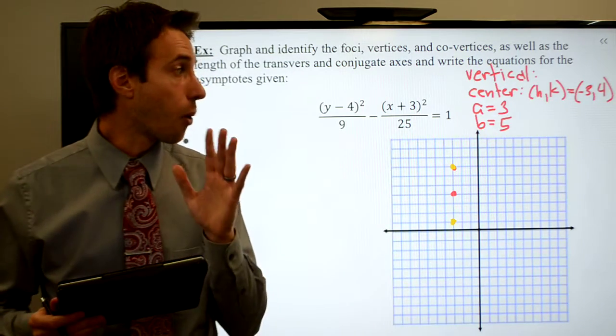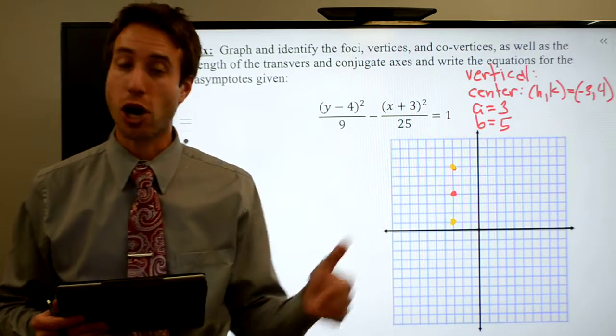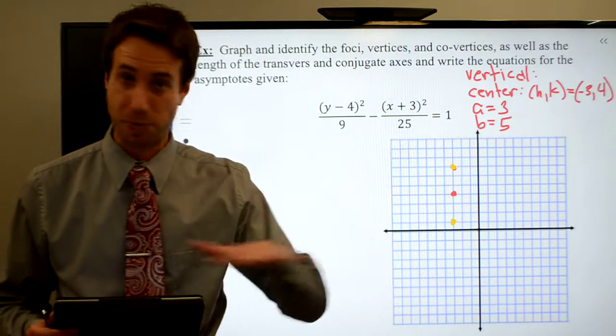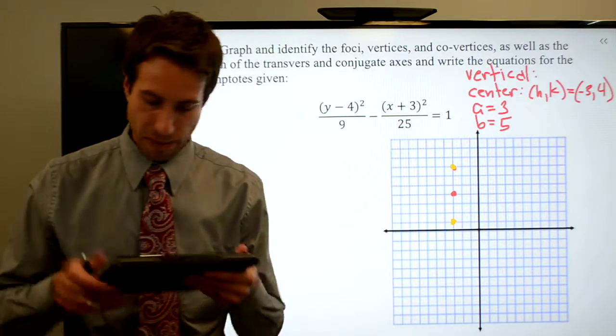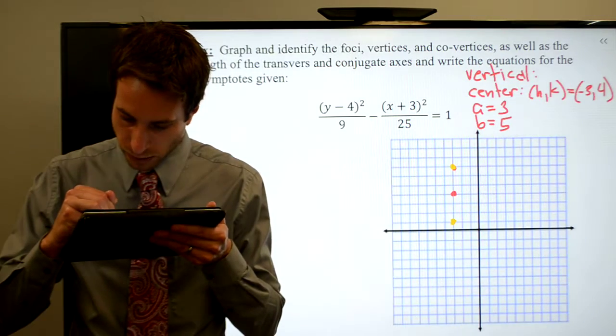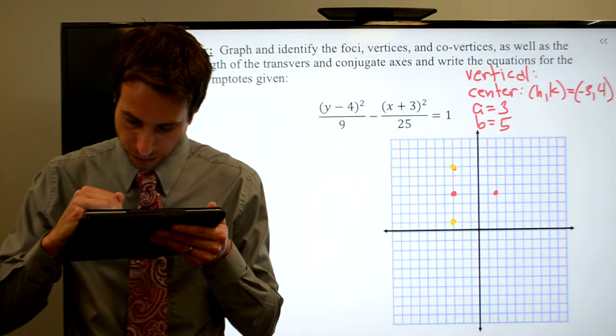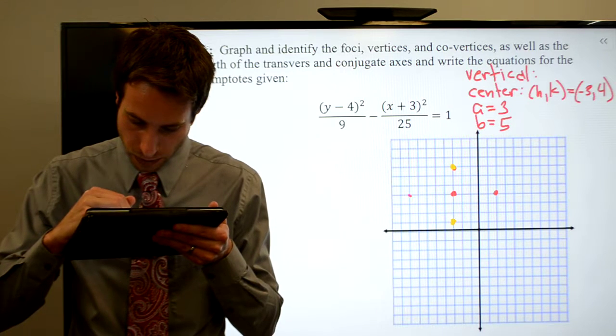and now my b, which is always the conjugate axis, which will run perpendicular to the transverse or horizontal, is going to be over five and back five.